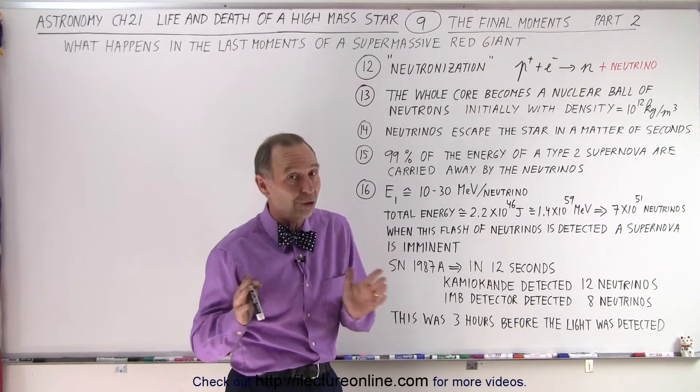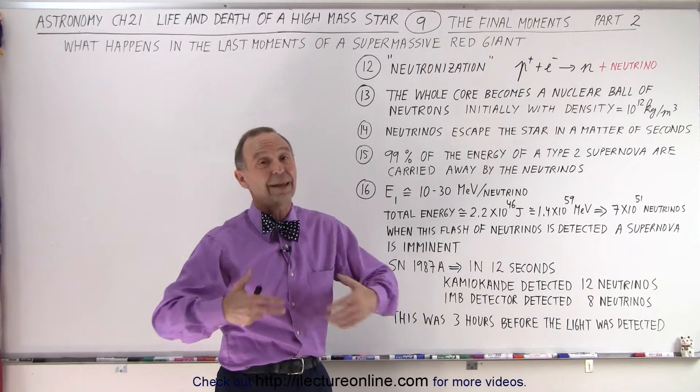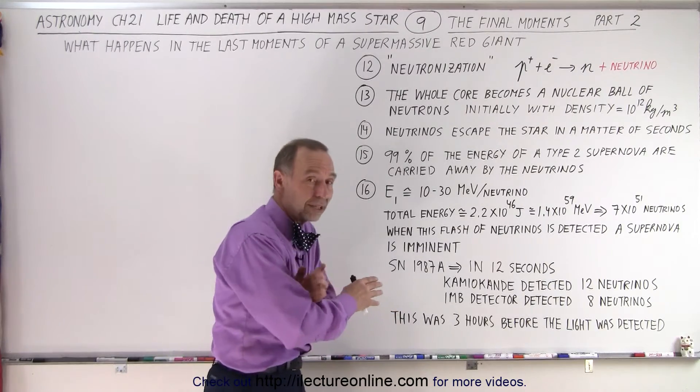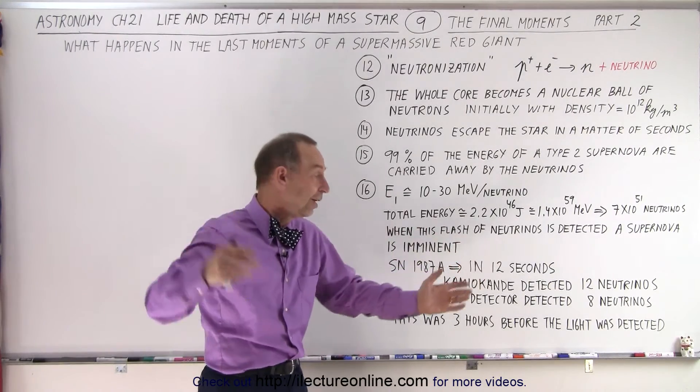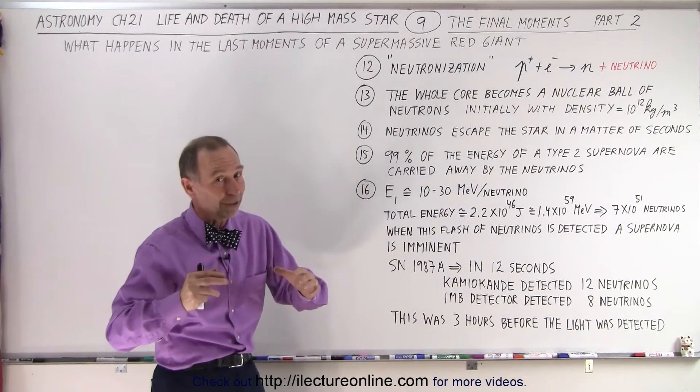That is enormous, an enormous number. Now, you may say, well, that's not very much. Well, it turns out that typically in a given day, only one or two neutrinos are detected over the period of an entire day. So, when 12 in one and 8 in the other were detected within a 12 second period,